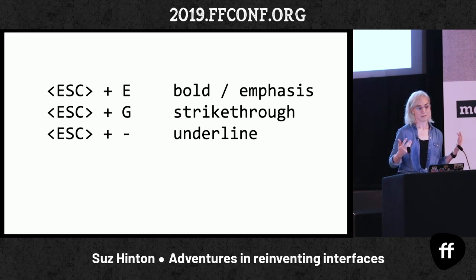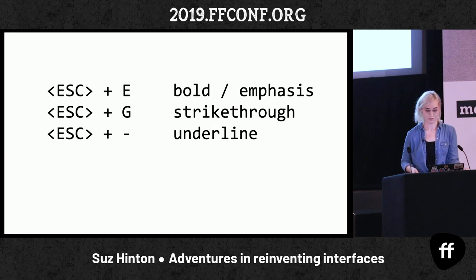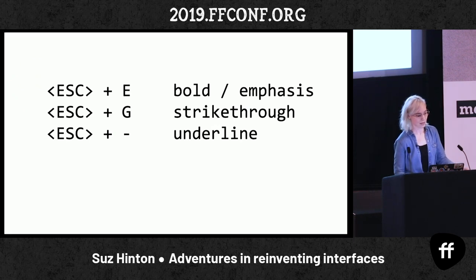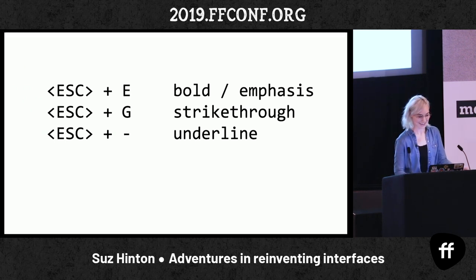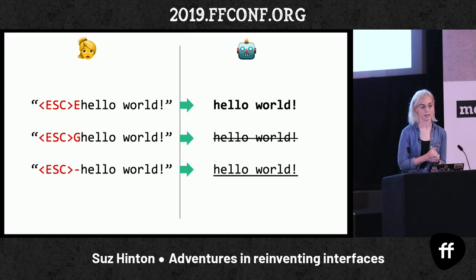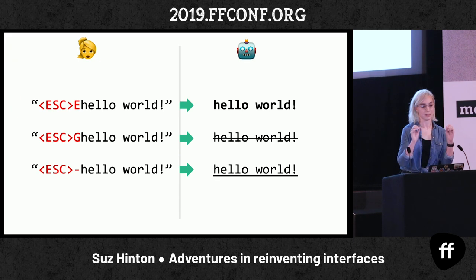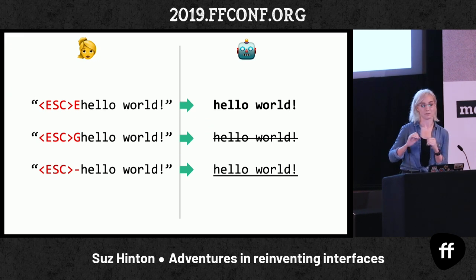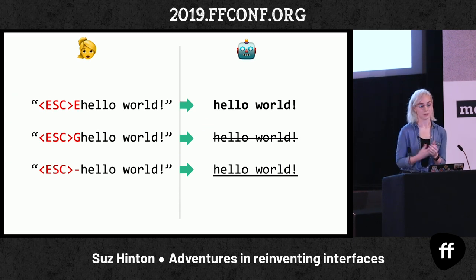Let's come up with some arbitrary decisions. Escape + E for bold or emphasis — any text that follows will be bold until you toggle it again. Treat these as toggles. Then escape + G for strikethrough — even though there's no G in strikethrough, we'll just do it, it's our protocol. And we'll throw caution to the wind and use a hyphen for underline. So: escape + E gives bold hello world, escape + G gives strikethrough, and escape + hyphen gives underline.